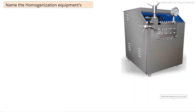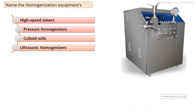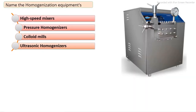The main equipment used in homogenization: first is the high speed mixer, second is the pressure homogenizer, third is the colloidal mill, and fourth is the ultrasonic homogenizer.